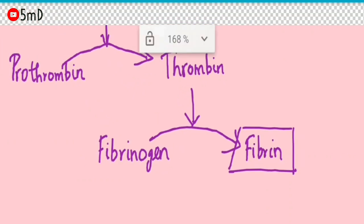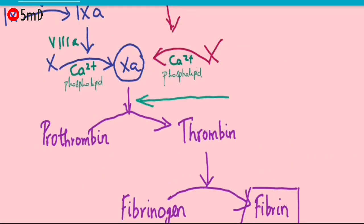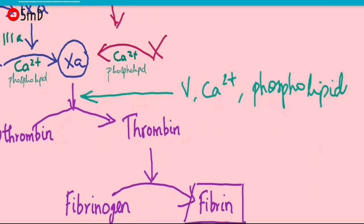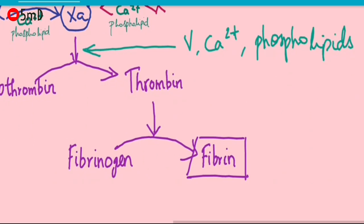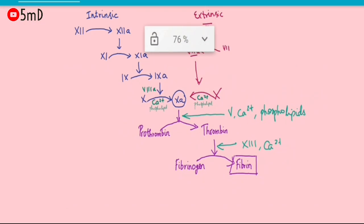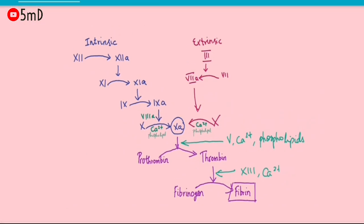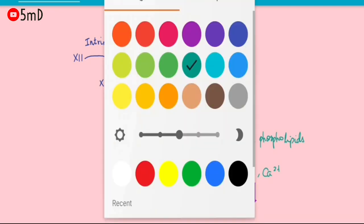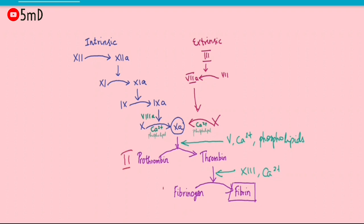In the common pathway, Factor 5, ionic calcium, and platelet phospholipids act in the activation of prothrombin to thrombin. Factor 13 and ionic calcium help in the activation of fibrinogen to fibrin. This completes the coagulation cascade. Among the clotting factors, prothrombin is Factor 2 and fibrinogen is Factor 1.